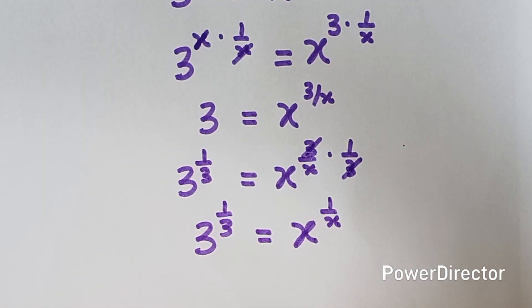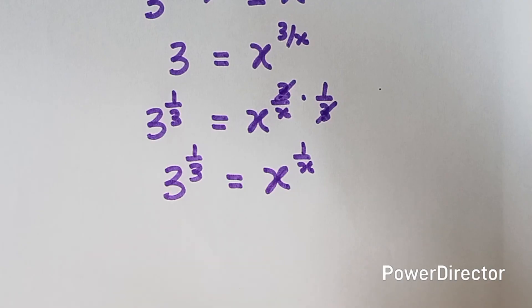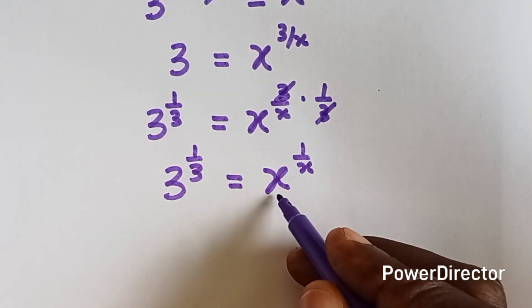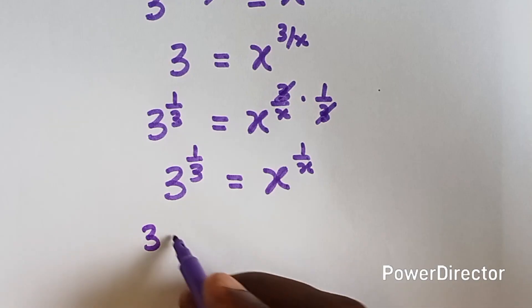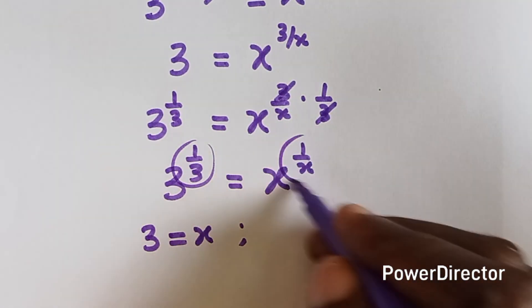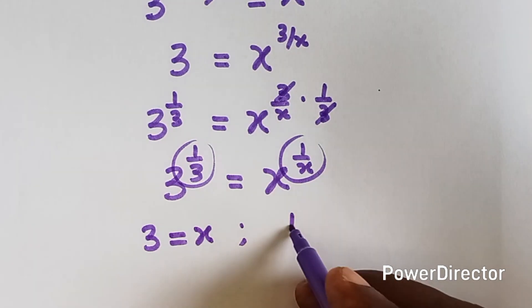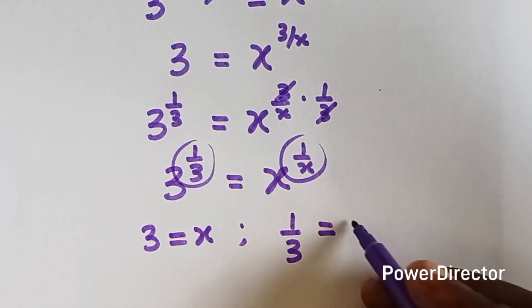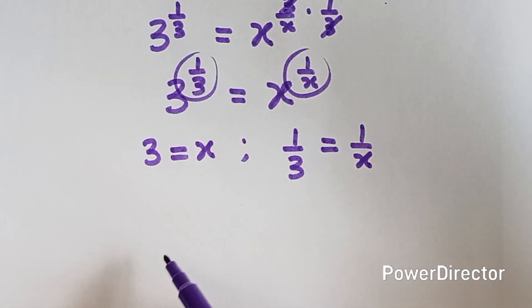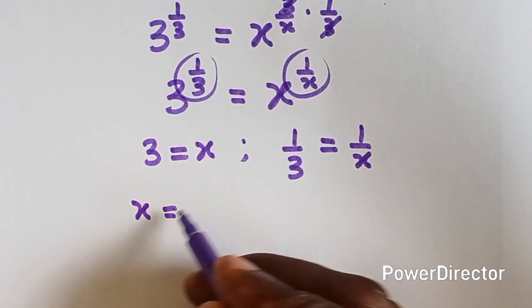Now we can equate the powers and the basis. So let's start by equating the basis. This 3 is the base and x is the base. That means that 3 equals x. And then we equate the powers. We have these and these are the powers. So we say 1 over 3 equals to 1 over x. From here, we know what x is. We say x equals to 3.